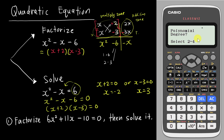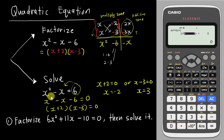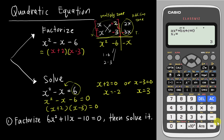This calculator can go up to power 4, but in SPM it's most likely power 2, which we call quadratic. You can see the general equation a, b, and c. 'a' is the number beside x squared, which is 1. 'b' is the number beside x, which is negative 1. And 'c' is negative 6 — you must make the equation equal to 0 first before deciding the c value. The calculator will then find x equals 3 and x equals negative 2.